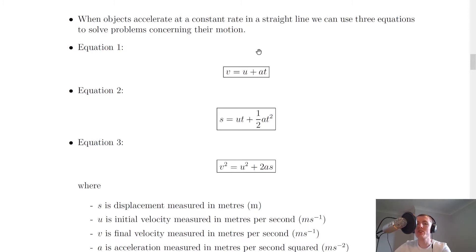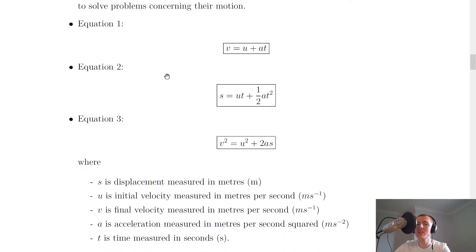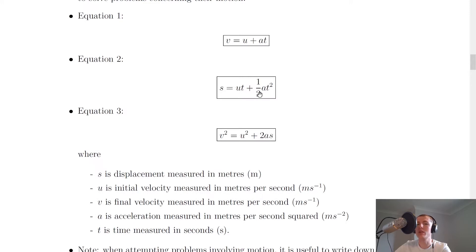Our first equation of motion then is v equals u plus at. Our second equation of motion is s equals ut plus a half at squared. And our third equation of motion is v squared equals u squared plus 2as.